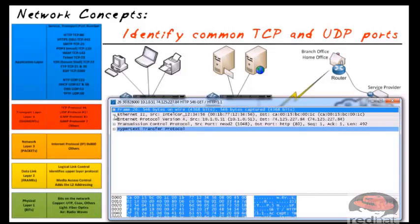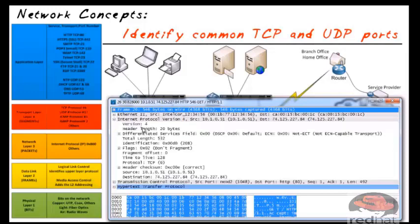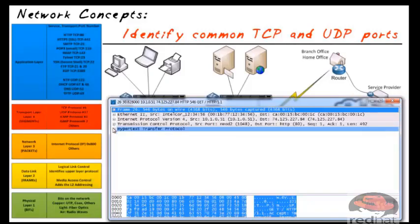At layer 3, the source IP address is 10.1.0.51 — that's my PC — and the destination IP address is 74.125.x.x. Now, how did my computer know that was the IP address of google.com? We'll talk about DNS in just a little bit. The piece de resistance for this packet is the layer 4 header.